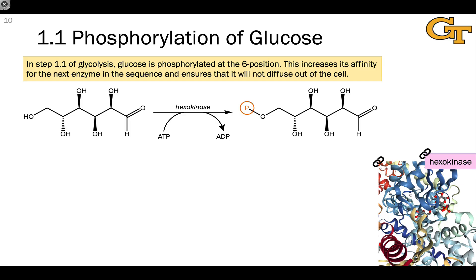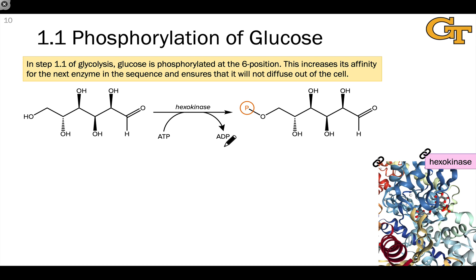In the first step of glycolysis, glucose is phosphorylated at carbon six. The phosphorylation is affected by a molecule of ATP, whose terminal phosphate reacts to form ADP. And just to keep the equation balanced overall, there's a proton that's generated here as well.